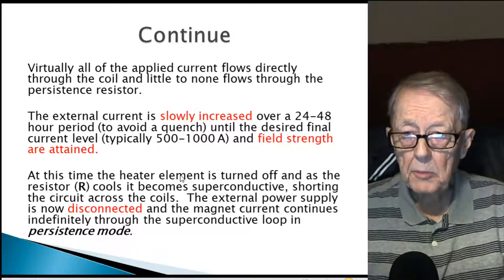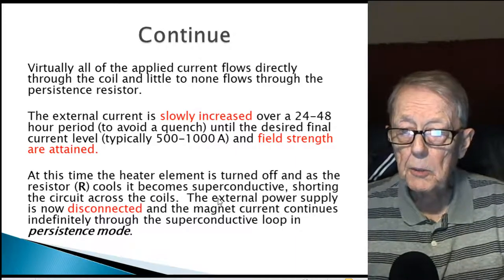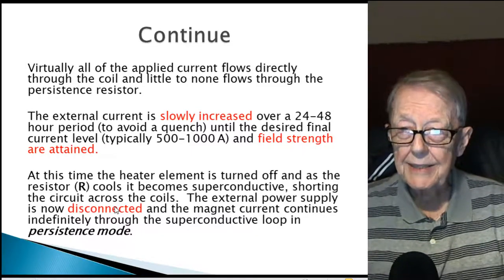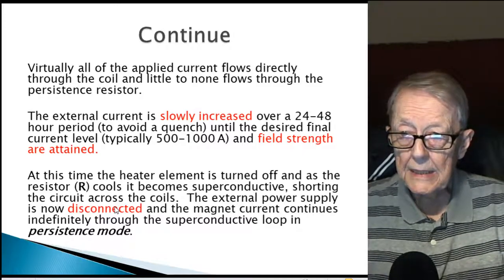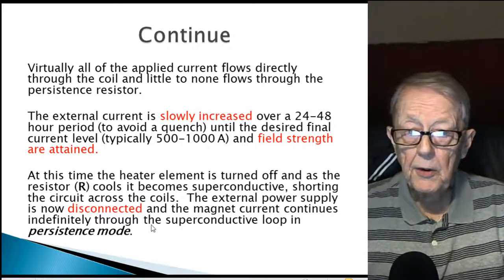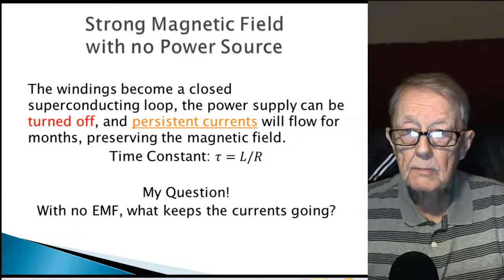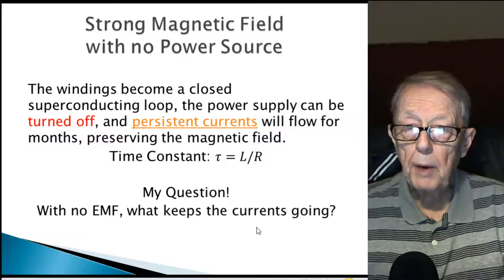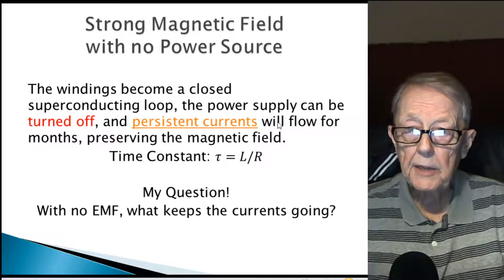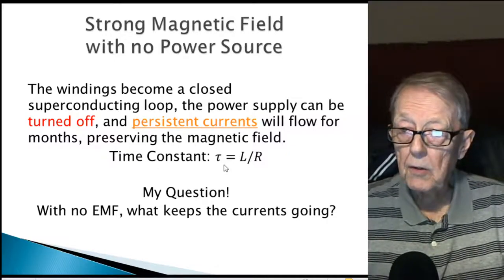At that point, the heater element is turned off. As the resistor cools, it becomes superconductive, shorting the circuit across the coils. The external power supply is then disconnected, and the magnetic current continues indefinitely through the superconductive loop in what's called the persistence mode — a strong magnetic field with no power source. One reference says the current flows indefinitely, another says for months. There is actually a time constant involved with an RL circuit: tau equals L over R. If R is nearly zero, the time constant becomes very large.